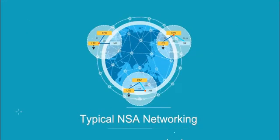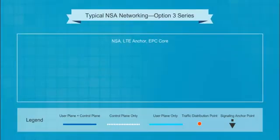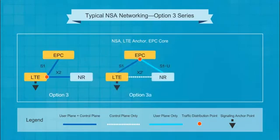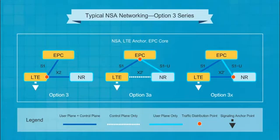Let's look at the most typical NSA networking scenario: the Option 3 series. The series includes three networking modes — Option 3, Option 3A, and Option 3X. These three options are almost the same. In each one, the core network is an EPC, the wireless network is LTE and NR, and the signaling plane is anchored on the LTE side.